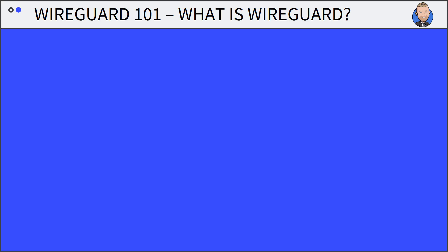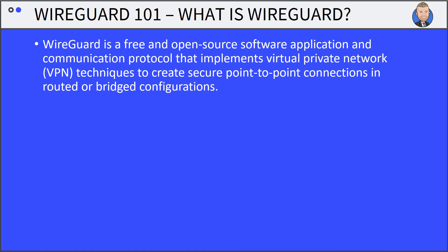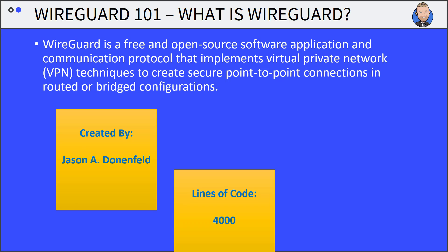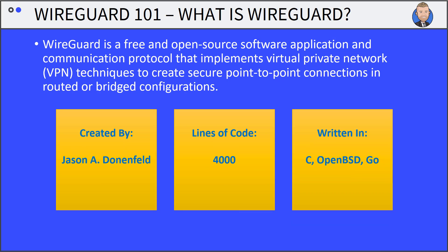WireGuard 101 — what is WireGuard? WireGuard is a free and open-source application and communication protocol. It implements virtual private network (VPN) techniques to create secure point-to-point connections and routed operator configurations. It was created by Jason A. Donafield. It has around 4,000 lines of code. When you compare that with OpenVPN, which has over 100,000 lines of code, it's very simplified and way easier to modify and work with than most other VPN frameworks.